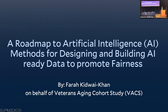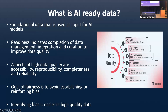My team is the Veterans Aging Cohort Study. By AI-ready data, we're talking about the foundational data used as input for AI models. Readiness indicates completion of data management, integration, and curation to improve data quality. Some aspects of high-quality data are accessibility, reproducibility, completeness, and reliability. We work on all these tasks to achieve the ultimate goal of fairness, and one of the big parts of doing that is to avoid establishing or reinforcing bias. Identifying bias is much easier in high-quality data.